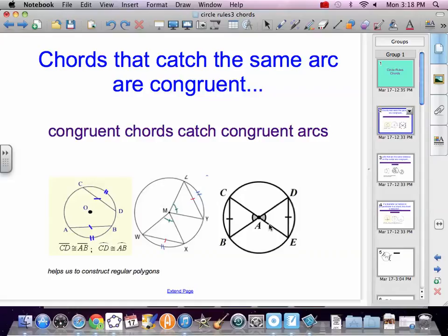Same thing looking over there. In here at A, we've got the same angle, therefore the chords DE and CB are the same. So congruent chords, if it catches the same angle, it has the same central angle.